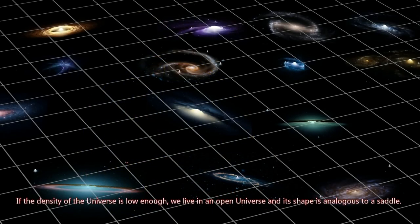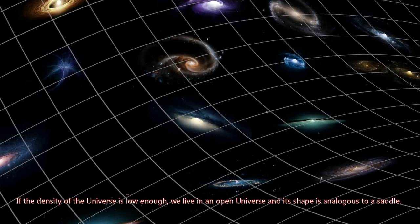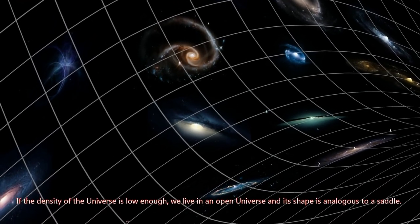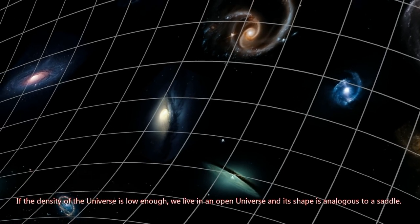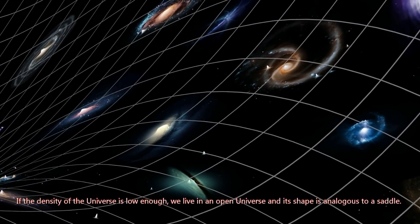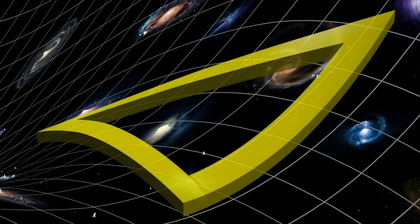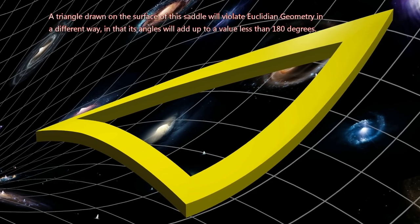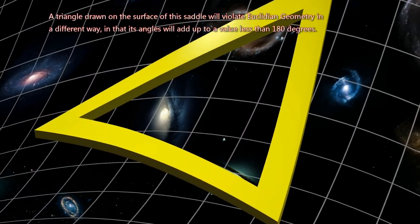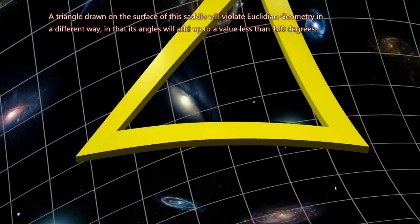If the density of the universe is low enough, we live in an open universe, and its shape is analogous to a saddle. A triangle drawn on the surface of this saddle will violate Euclidean geometry in a different way, in that its angles will add up to a value less than 180 degrees.